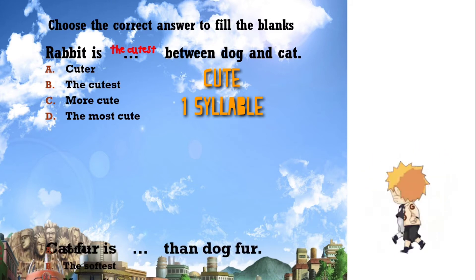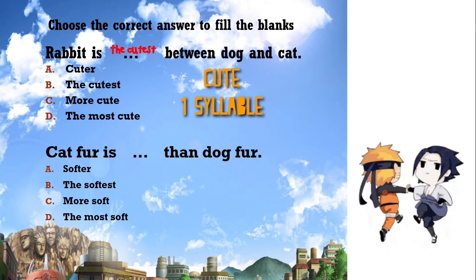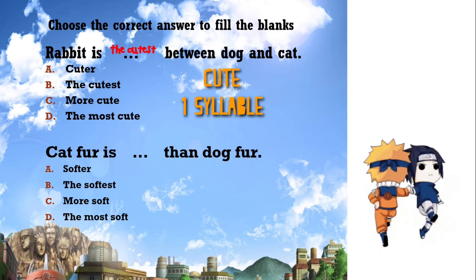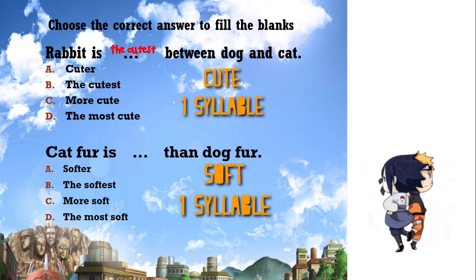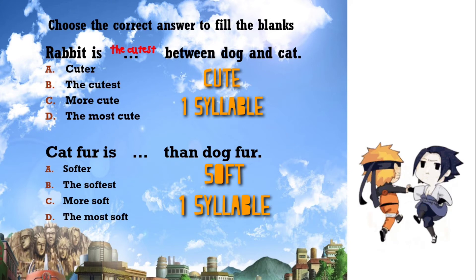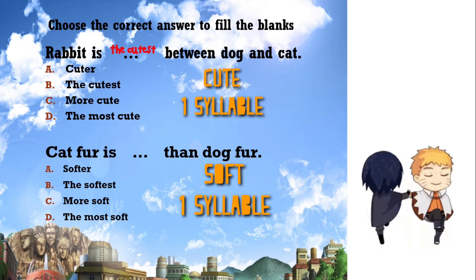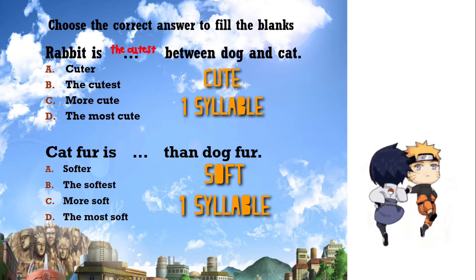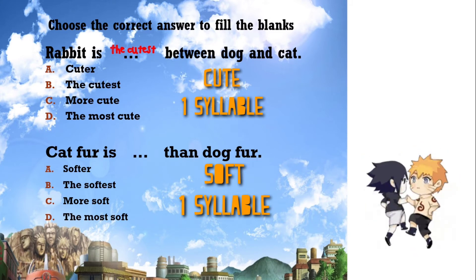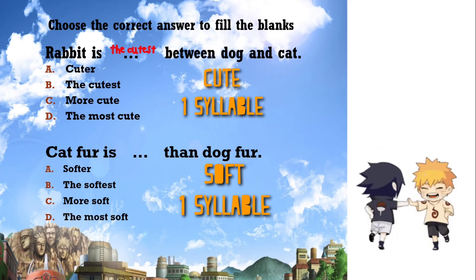Number two: 'Cat fur is ___ than dog fur.' This sentence is comparing two things — cat fur and dog fur. The basic adjective is 'soft.' When comparing two things, we use the comparative form. 'Soft' has only one syllable, so the answer is 'softer.'